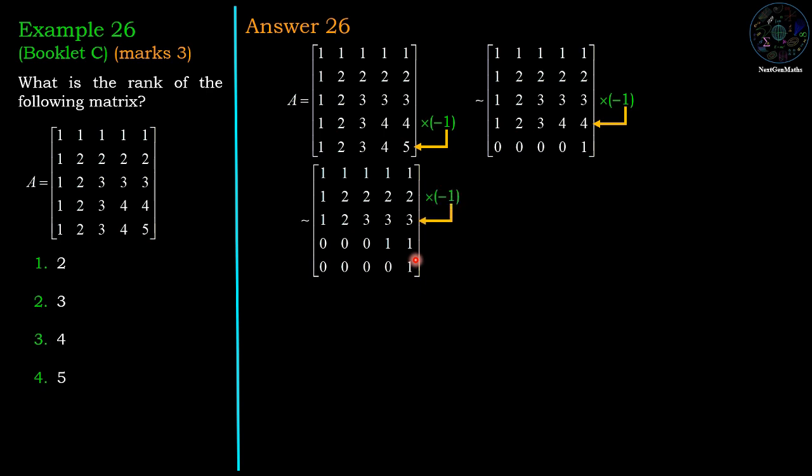Next operation: multiply 2nd row by minus 1 and add to the 3rd row. Then we have 0, 0, 1, 1, 1 in the 3rd row. Multiply 1st row by minus 1 and add to the 2nd row.